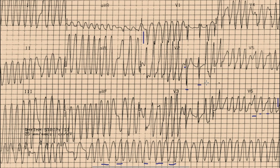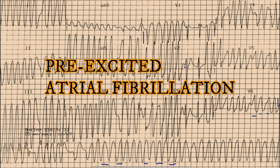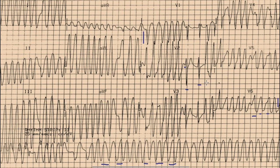So whenever you find a very fast irregular broad complex tachycardia with variable QRS morphology, you must always think of atrial fibrillation with pre-excitation — meaning that this atrial fibrillation is being conducted through an accessory pathway.